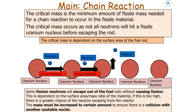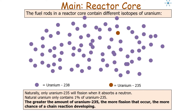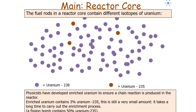The fuel rods in the reactor core contain different isotopes of uranium. Naturally, only uranium-235 will fission when it absorbs a neutron. Natural uranium contains just 1% uranium-235, so the greater the amount of uranium-235, the more fission that will occur and the greater the chance of a chain reaction developing in our reactor vessel. Physicists have developed enriched uranium to ensure a chain reaction is produced — enriched uranium contains about 3% uranium-235 as opposed to 1%.